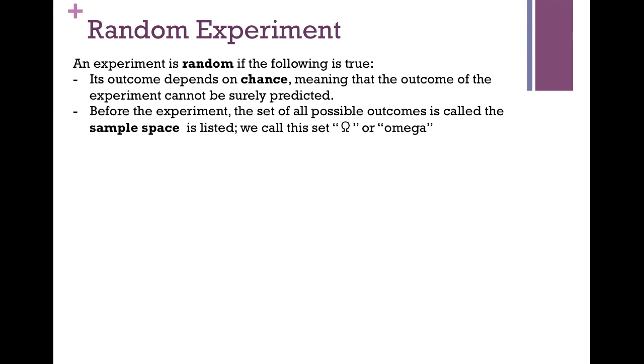Beginning with a random experiment. An experiment, which is basically anything that you do in probability, is random if the following is true. Its outcome needs to depend on chance — that's what probability is, it's chance, it's luck, it's odds. There is no right way of saying whether or not when you flip a coin you get heads or tails. The experiment cannot be surely predicted. Also, before the experiment, the set of all possible outcomes can be stated as the sample space. We call this omega, which looks like a horseshoe.